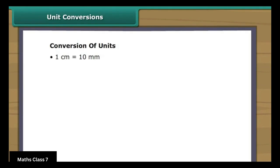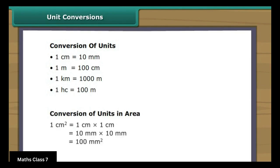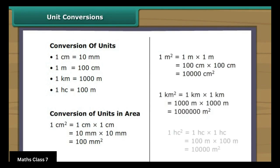Unit conversions. We know that in 1 cm there are 10 mm, and in 1 m there are 100 cm. Sometimes we require changing from a bigger unit to a smaller unit. Now that we know the basics of the unit system, we can easily convert from bigger units to smaller units.